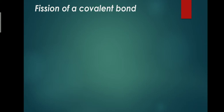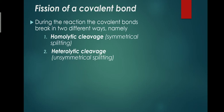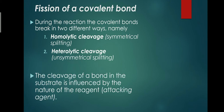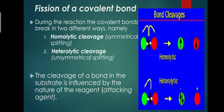When we talk about bond breaking, we call it fission — specifically, fission of a covalent bond. During a reaction, the covalent bond breaks in two different ways: homolytic cleavage, which is a symmetrical splitting, or heterolytic cleavage, which is an unsymmetrical splitting. The cleavage of the bond in the substrate is influenced by the nature of the reagents and the reaction conditions.